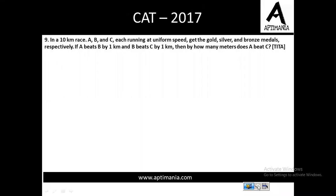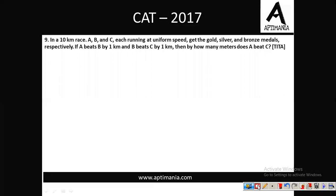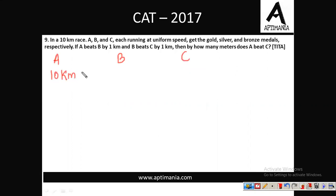Question number 9: In a 10 km race, A, B, C each running at uniform speed get gold, silver and bronze medals respectively. A beats B by 1 km, meaning when A completed the race of 10 km, B was 1 km away from the finish line, so B must have been at 9 km.